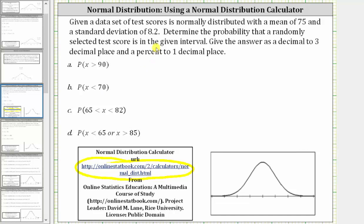Given a data set of test scores is normally distributed with a mean of 75 and a standard deviation of 8.2, determine the probability that a randomly selected test score is in the given interval. Give the answer as a decimal to three decimal places and a percent to one decimal place.